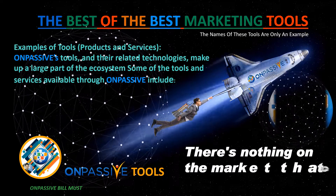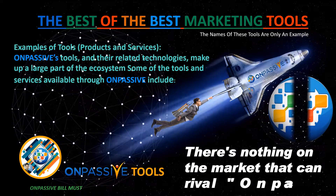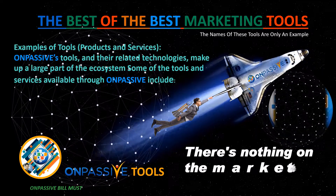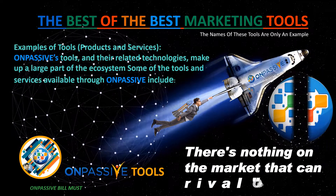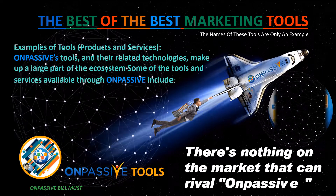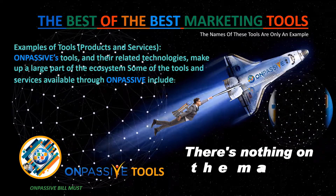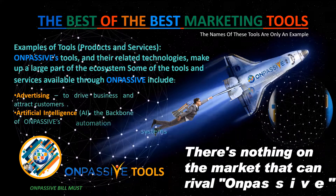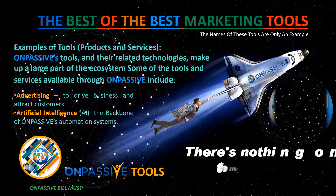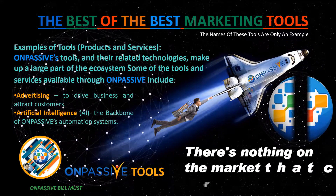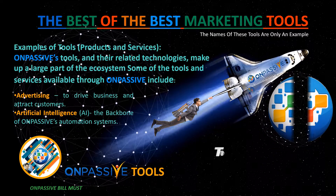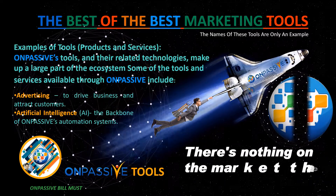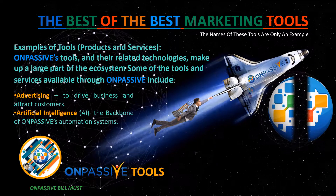Examples of tools, products and services. OnPassive's tools and their related technologies make up a large part of the ecosystem. Some of the tools and services available through OnPassive include Advertising, to drive business and attract customers, and Artificial Intelligence (AI), the backbone of OnPassive's automation systems.